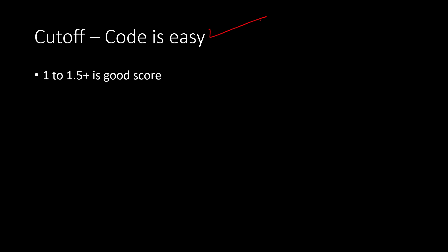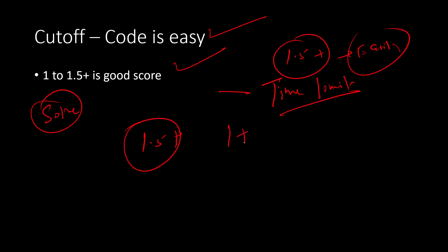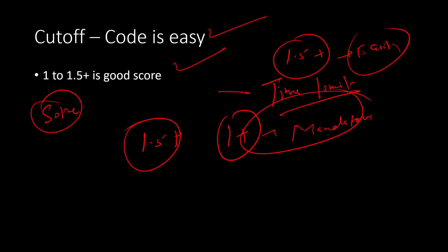Talking about the cutoff: the code is easy, and 1 to 1.5 plus is a good score. If you are solving 1.5 plus, you can easily do it with basic coding knowledge. The only concern is if you are not writing the correct code in the first attempt, time limit becomes a problem. But if you know the logic and write the correct code the first time, you will solve it very easily. 1.5 plus is a very good score; otherwise, at least 1 plus is mandatory to solve. That can be the basic cutoff.